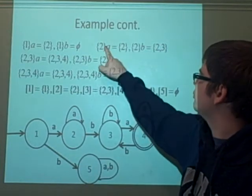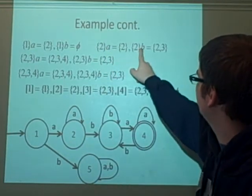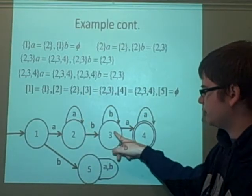2. If we apply A to 2, we get 2. So we stay where we are. If we apply B, we go to 2, 3, which we've labeled as 3, over here. So if we apply B, we go to 3.